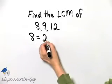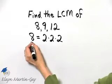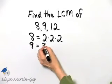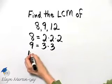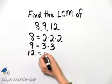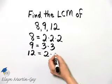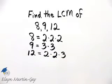8 is 2 times 2 times 2. 9 written as a product of primes is 3 times 3. And what is 12 written as a product of primes? 12 is 2 times 6, but 6 is 2 times 3, so 12 is 2 times 2 times 3.